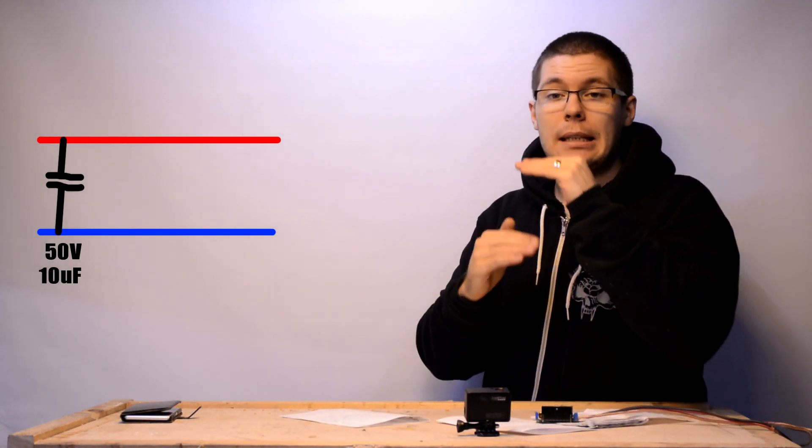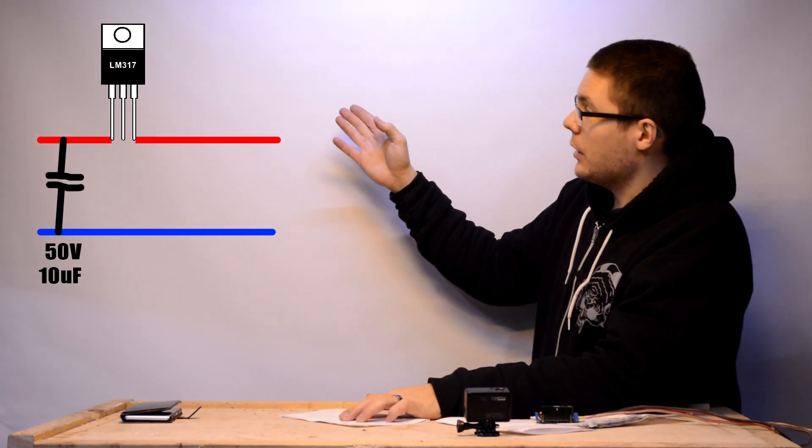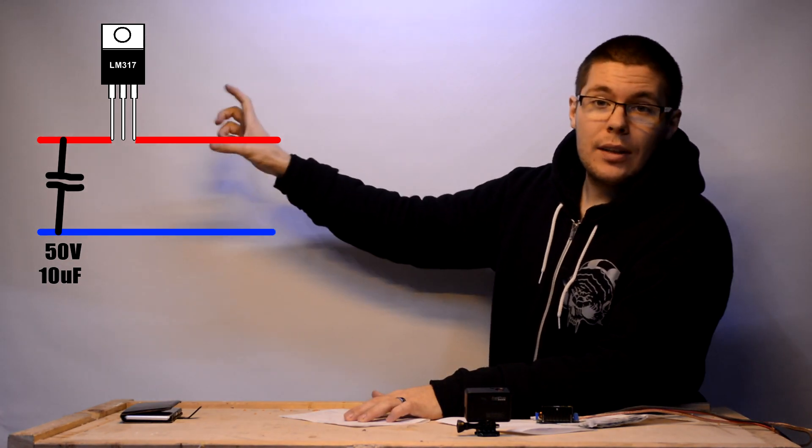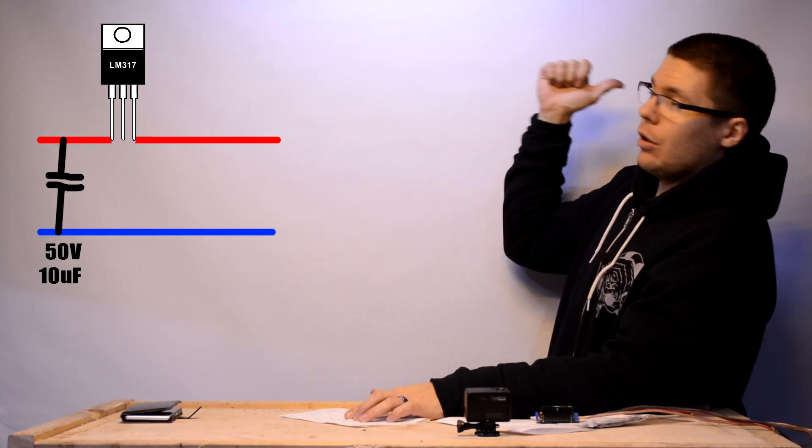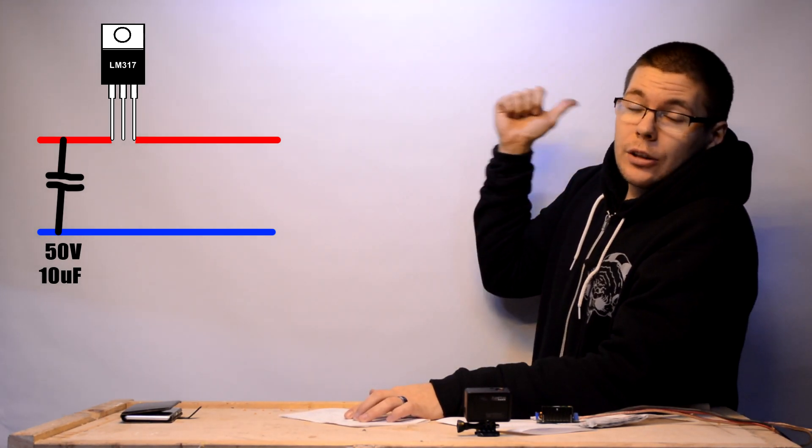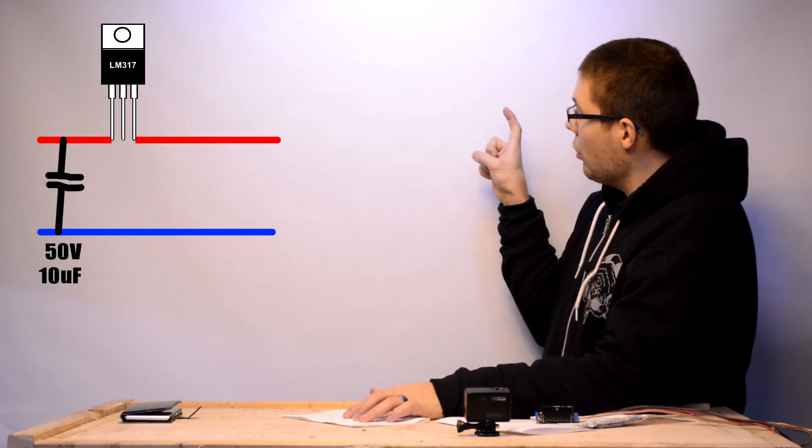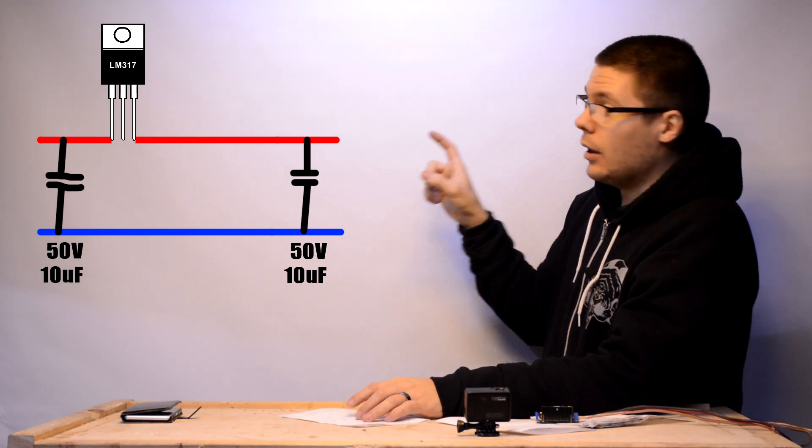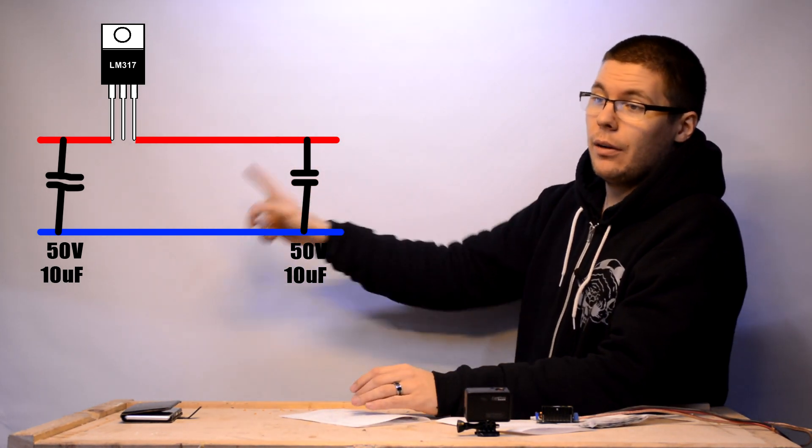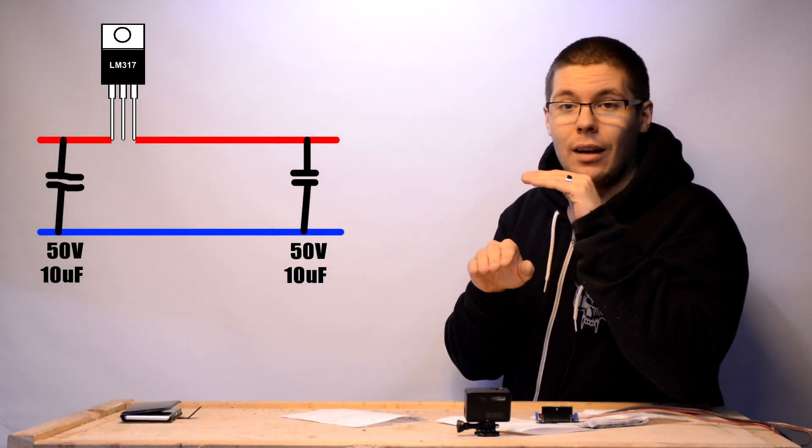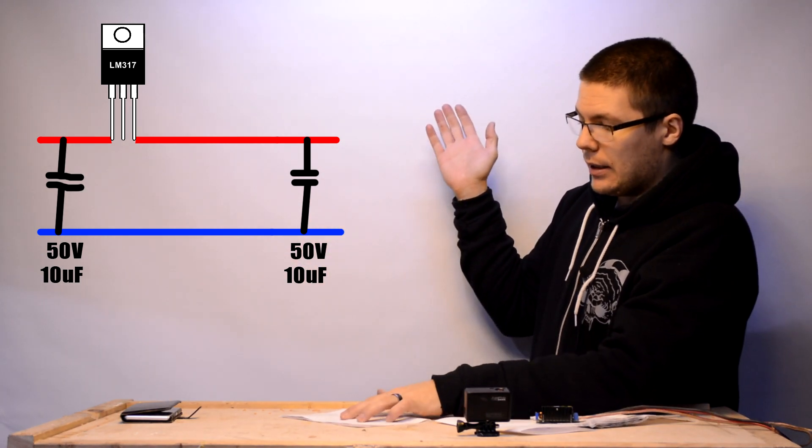It stabilizes the voltage that goes into this system. Then you have LM317 here. And you put the stabilized voltage into the input side. And output side goes back to the alternator or whatever you want it to go. So and you put also in the end another capacitor here. So these are let's say 50 volts, 10 microfarad capacitors just to stabilize the voltage that's coming in and coming out. Here LM317 as I said.